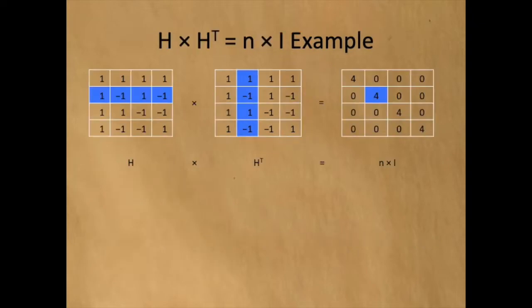Another property is that a Hadamard matrix times its transpose equals n times the identity matrix. In this case, n equals 4. For example, computing the dot product of this row of h and this column of h transpose gives the diagonal value of 4.